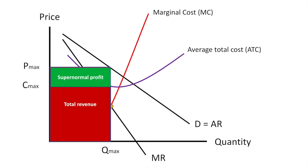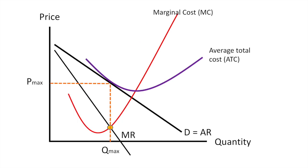This is the previous firm's cost and revenue diagram. As new firms enter the market, the demand for this firm's products will fall. This is because its customers are now taking their business elsewhere, causing this specific firm to face a fall in demand. Demand will keep falling until the firm is earning normal profit. As the firm is now earning normal profit, entering the market is no longer attractive. At this point, the firm can continue to sell the product but does not earn any supernormal profit.